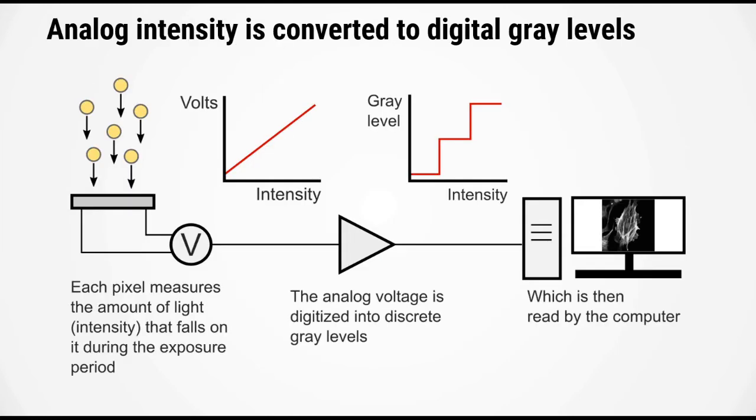Let's now take a look at how a single pixel works. Each pixel measures the amount of light that falls upon it during the exposure period. This light intensity is then converted into electrons by the camera pixel, and this can be read out as volts. Now of course, the voltage is continuous with intensity, but to be able to store this data on the computer, we have to digitize it.